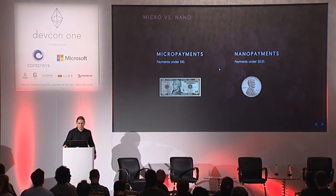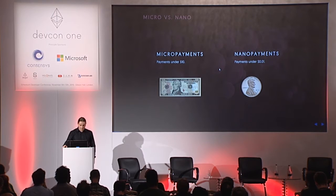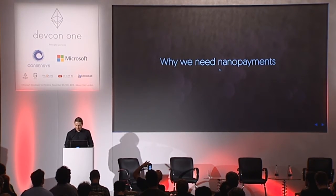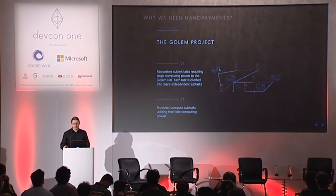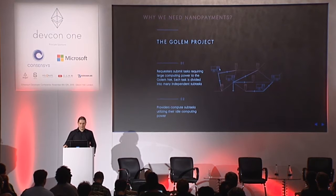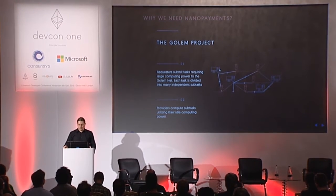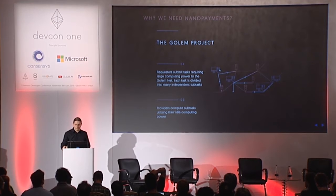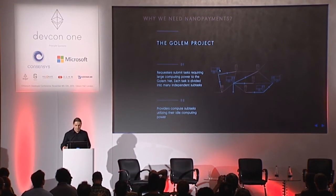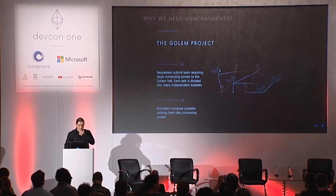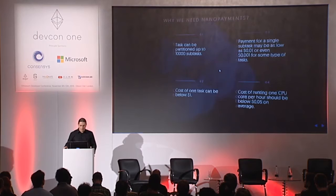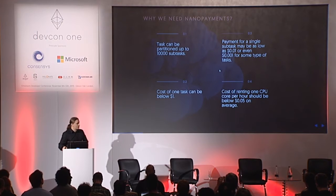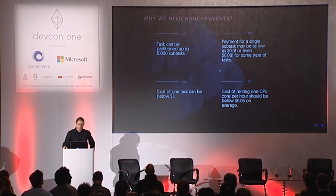It's not a formal definition, but we believe that a typical micro payment is a payment under $10. We came across this problem when we tried to implement parts of our project — the Golem project — which is a distributed supercomputer. In fact it's a distributed peer-to-peer network where each node can participate both as a computer and as a task sender, and each node taking part in computation should be able to receive payment eventually, resulting in nano payments because tasks can be split into pretty small amounts.